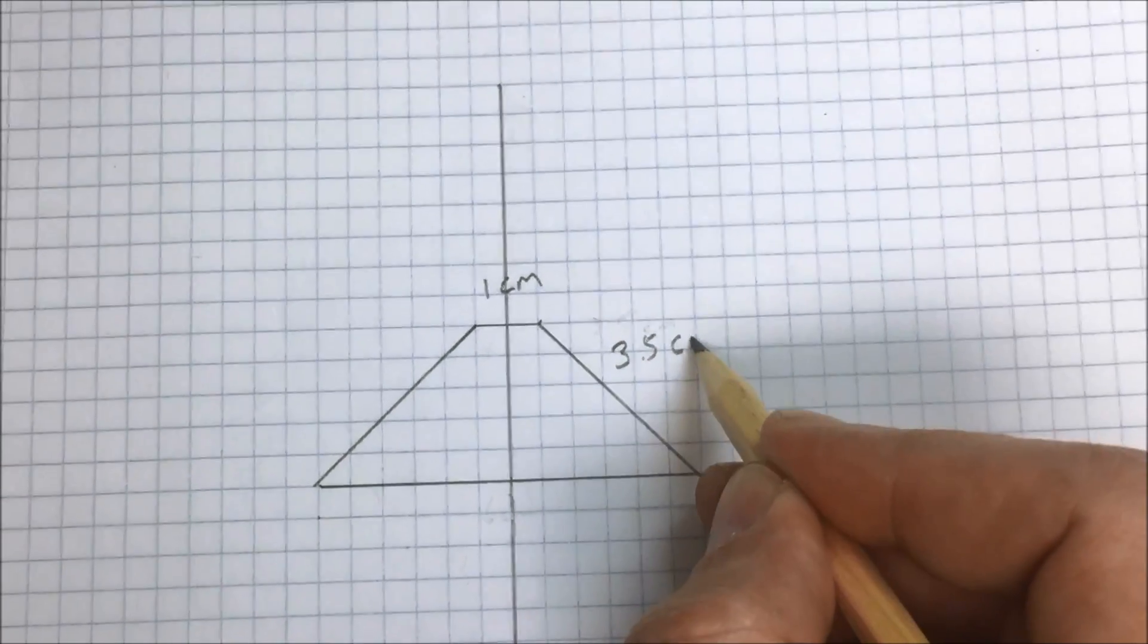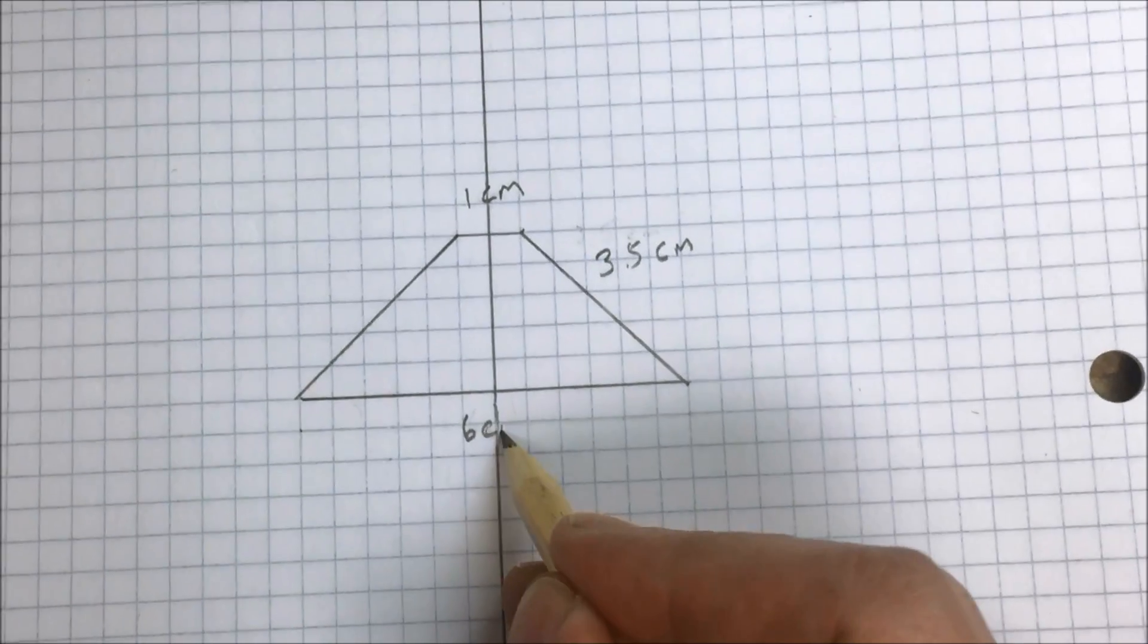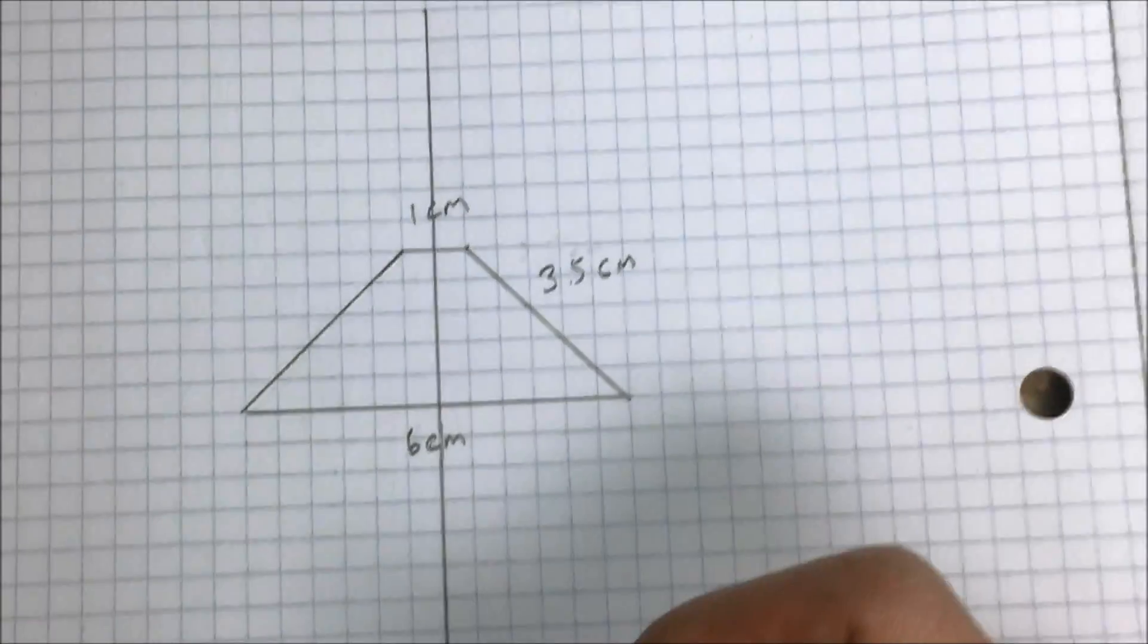Top of the shape is going to be one centimeter. Both equal sides should be 3.5 centimeters and the bottom should be 6 centimeters.